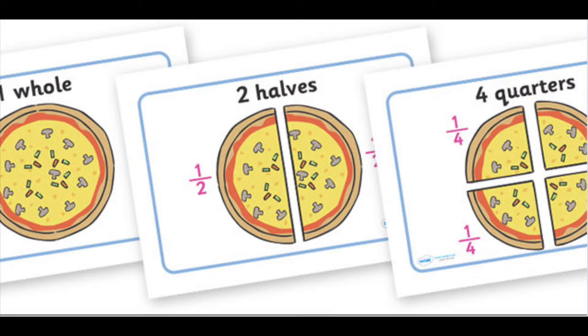In this picture, the second pizza has been broken into two parts. Each part is known as a half. It is written with a one on the top, known as the numerator, and a two on the bottom, known as the denominator. The bottom number represents the total pieces needed to complete one object.